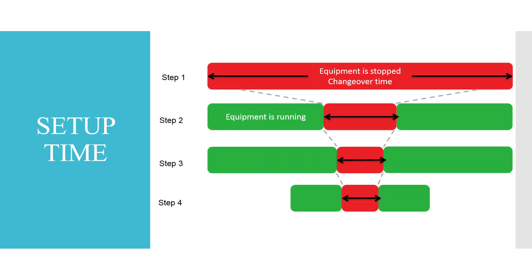Here, in diagrammatic format, I have represented the setup time. In the first step, our setup time is very large, but we should always try to reduce it — and this can be achieved with the help of the lean tool SMED. In the second step, we have reduced our setup time. As we move to the final stage, we have minimized the setup time and increased our production time. Ultimately, you have eight hours of production time — the more your setup time, the less your production time, and vice versa. So we should always focus on reducing setup time so we can dedicate more time to actual production, which will improve productivity and efficiency.